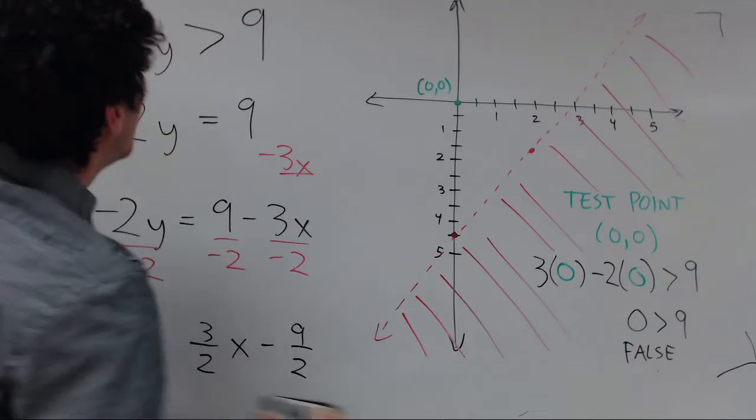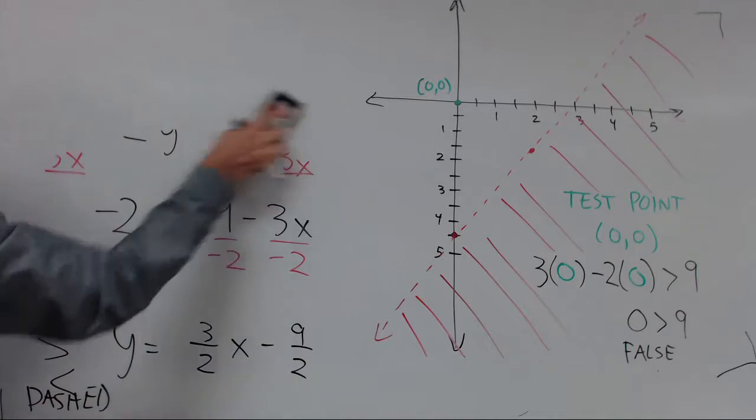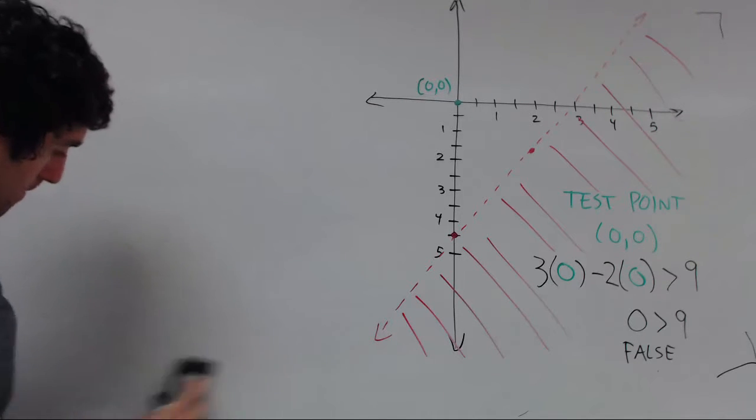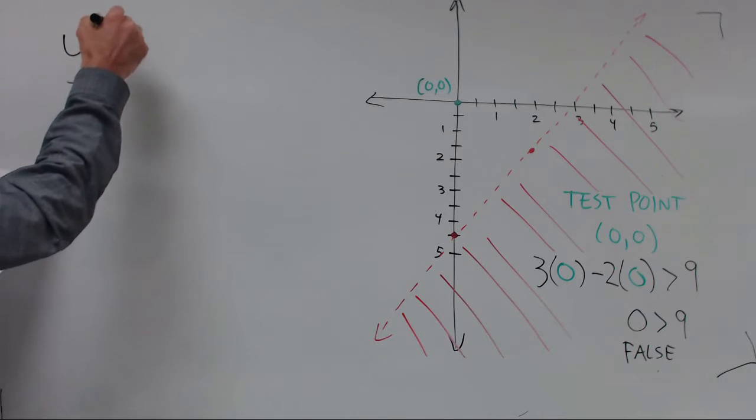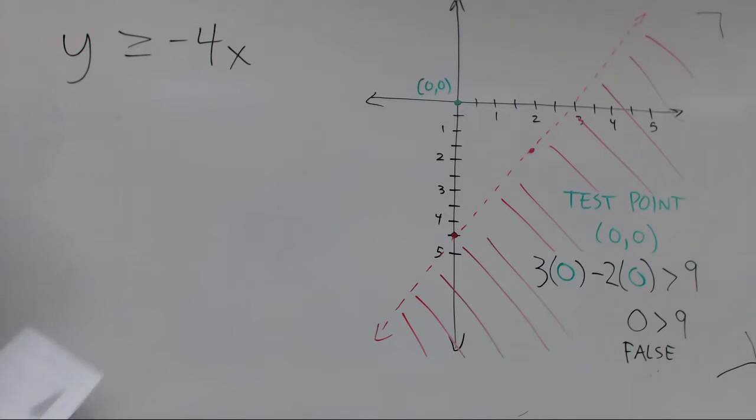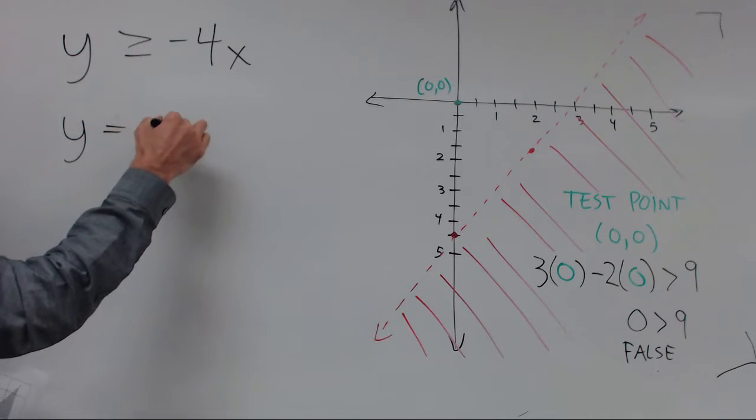So let's try one more example. In this second example, we look at y is greater than or equal to negative 4x. Again, we look at the corresponding equation, y equals negative 4x.